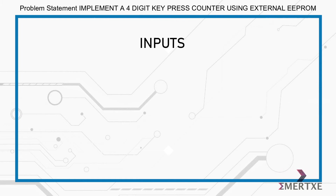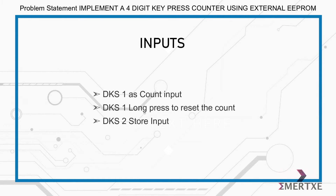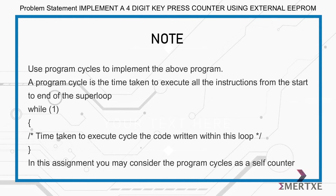The inputs required for this assignment are: DKS1 as count input, DKS1 long press to reset the count, and DKS2 as store input. Please note the use of program cycles to implement the above program. A program cycle is the time taken to execute all the instructions from the start to the end of the super loop.